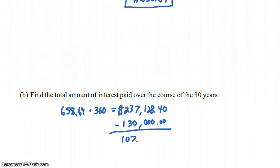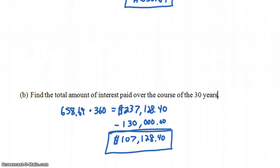The total interest paid is $107,128.40. So you take the total amount paid over 30 years — $658.69 per month for 360 months equals $237,128.40 — and subtract the $130,000 that went to actually pay for the house. That leaves $107,128 paid in interest.